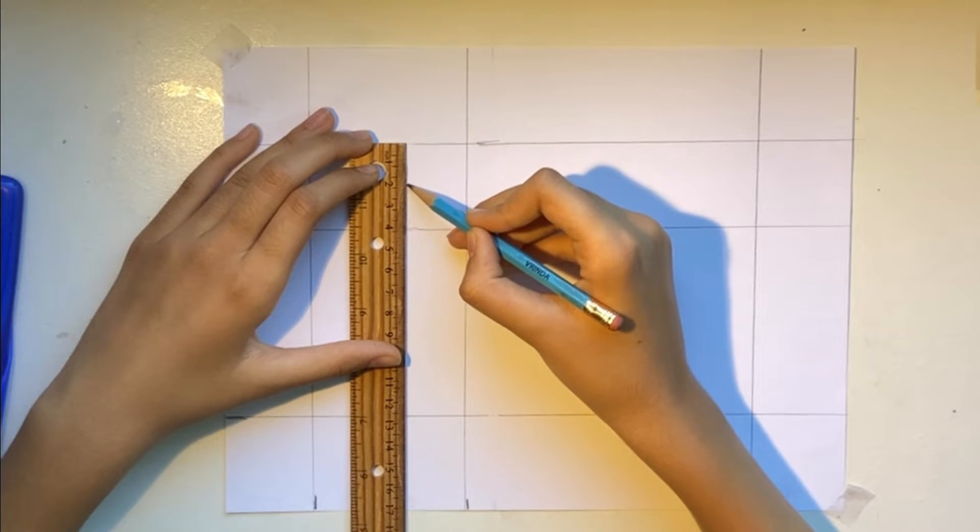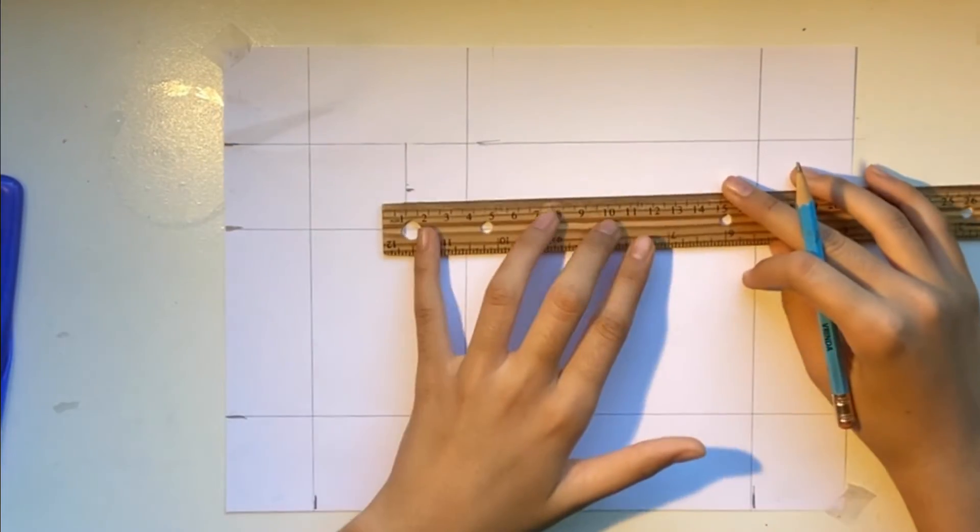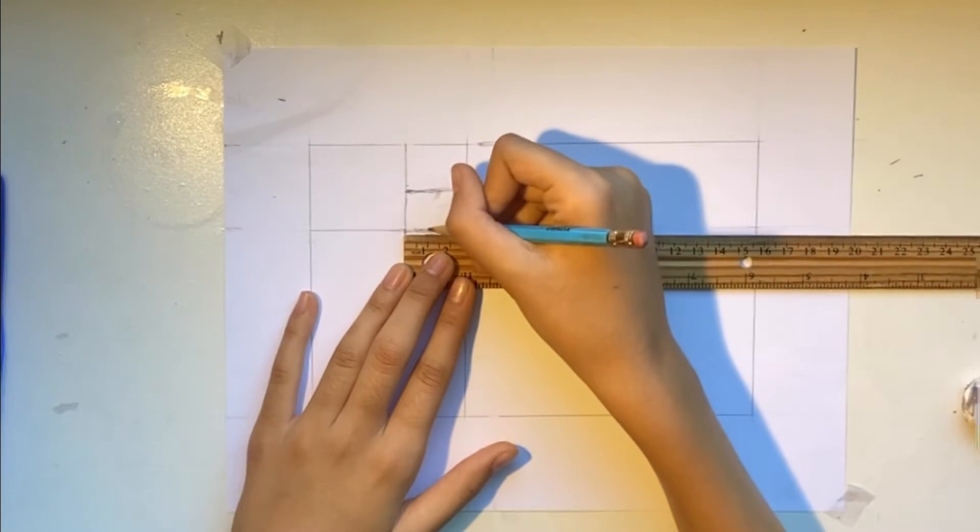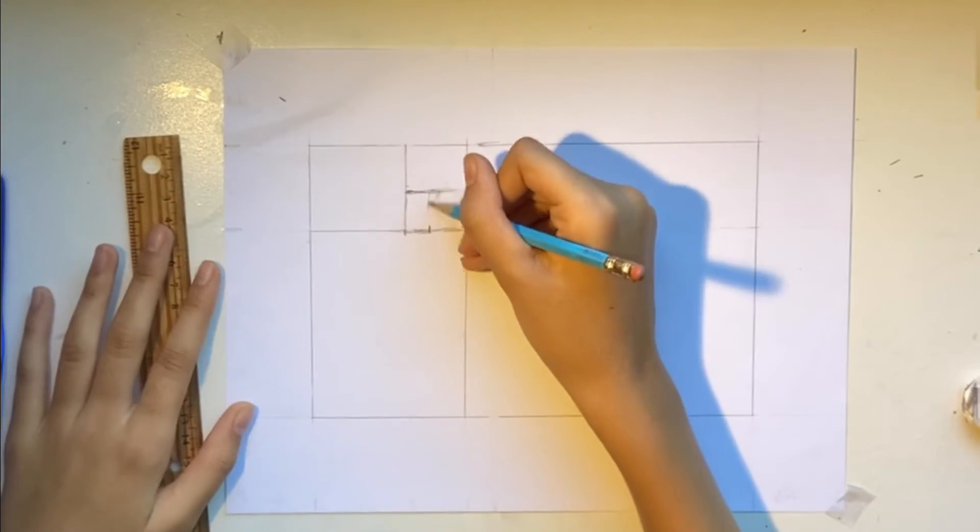Then, make a mark 2 cm away from your newly formed square. Now, draw a line 1.5 cm away from the side of your bottom rectangle.